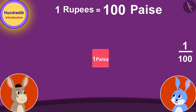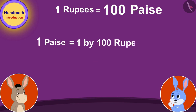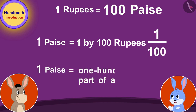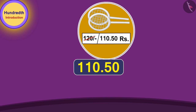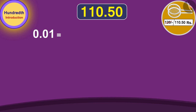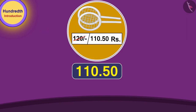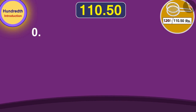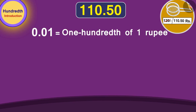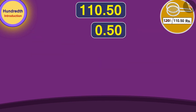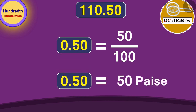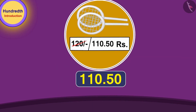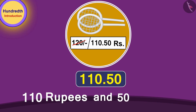Therefore, we can say that 1 paise is 1 by 100, or 1 hundredth part of a rupee. We can write one hundredth part of any number using decimal point as 0.01. The price of a badminton racket is 110.50 rupees. 0.01 rupee or one hundredth of a rupee is equal to 1 paise. Therefore, 0.50 rupees will be equal to 50 hundredth part of 1 rupee, or 50 paise. In this way, the price of a badminton racket is 110 rupees and 50 paise.